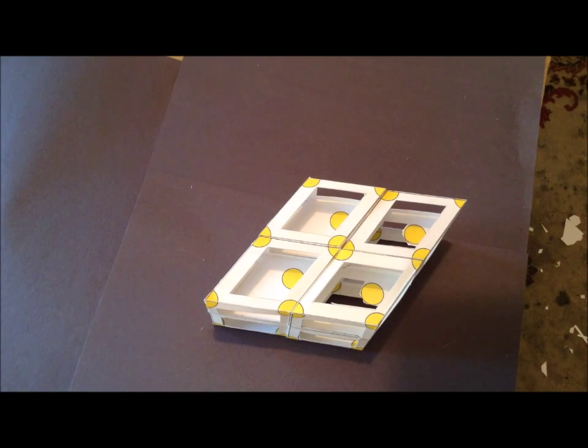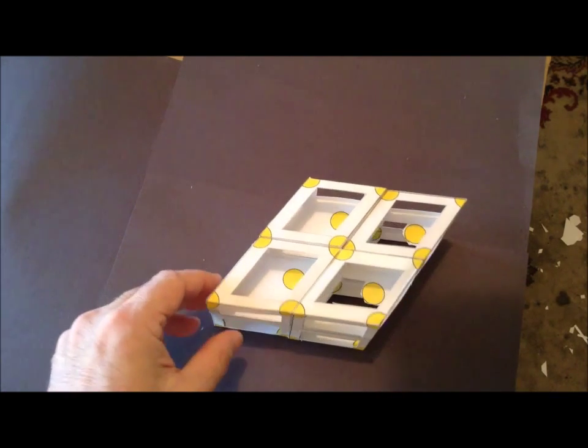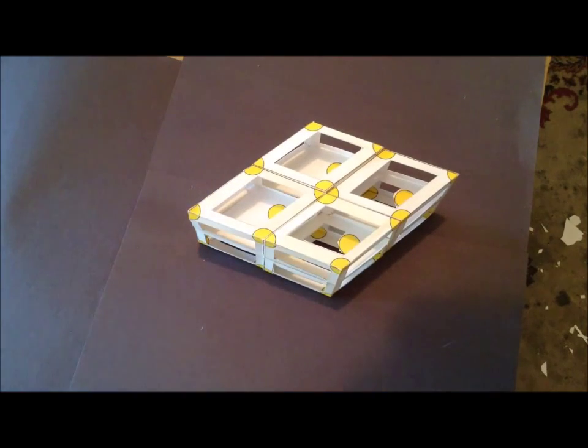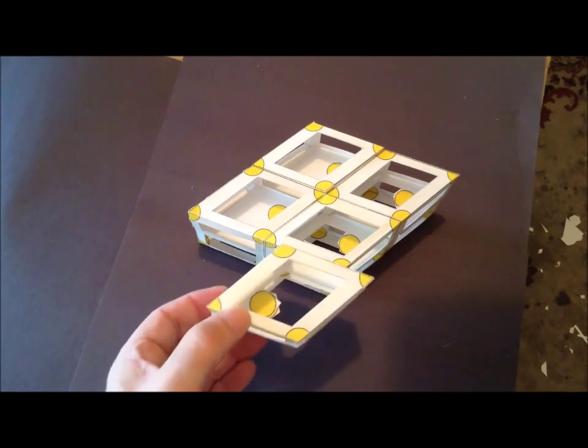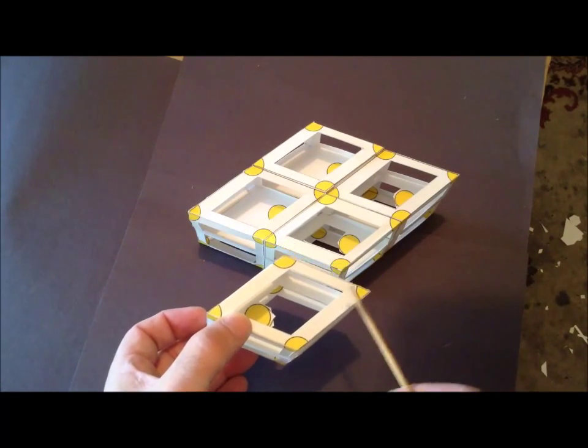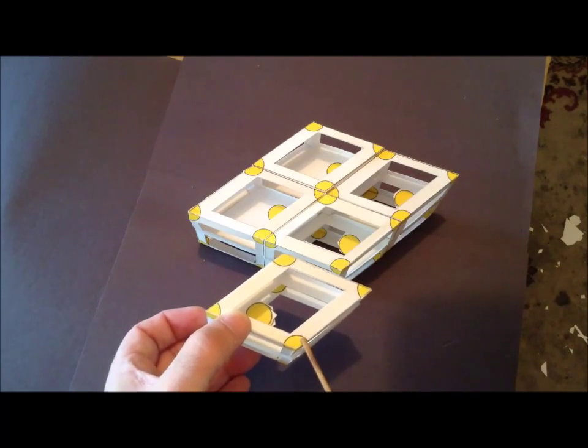We see that the hexagonal close-packed structure has two atoms per unit cell. We can also see this more clearly by just taking a single unit cell. We have the A atoms at the corner, and then we have the one inside.